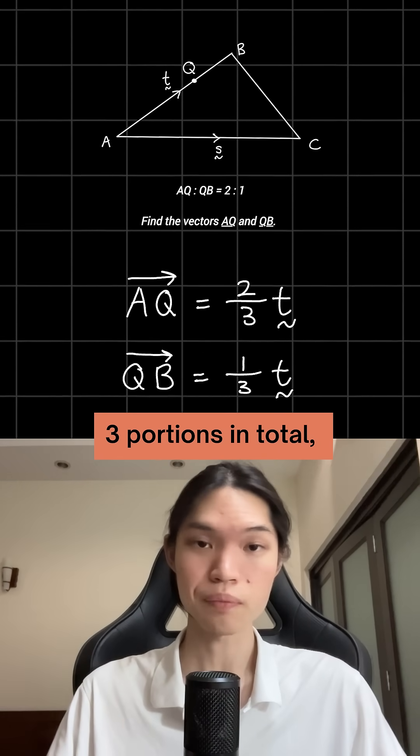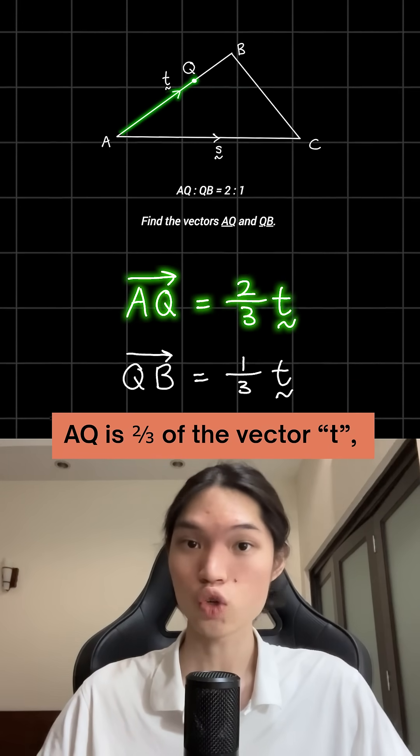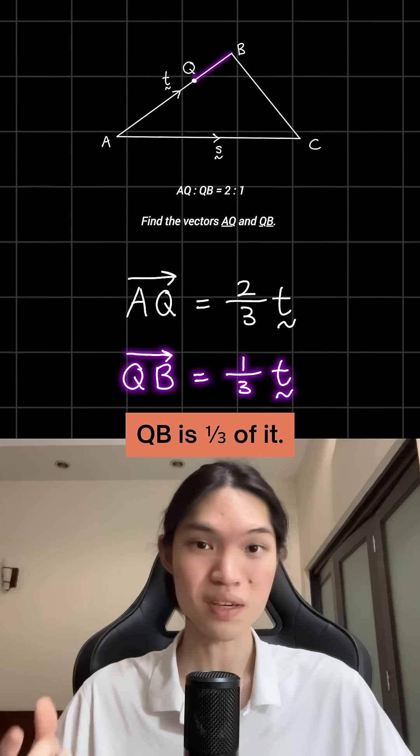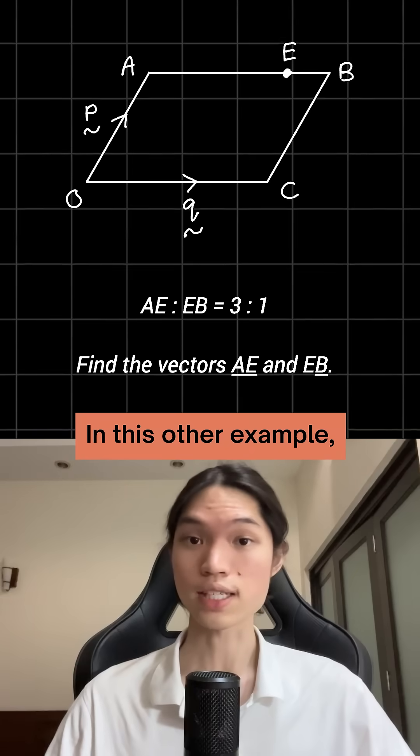Since there are 3 portions in total, that means that the vector AQ is 2 thirds of the vector T, whereas the vector QB is 1 third of it. In this other example,